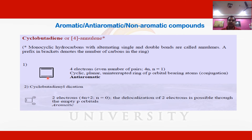In cyclobutadiene, it is cyclic and consists of two pi bonds, meaning four pi electrons, so it does not follow the 4n+2 rule. Instead, it follows the 4n rule used for anti-aromatic compounds. Since we have four pi electrons that are a multiple of four, n = 1, and cyclobutadiene is cyclic, planar, and has conjugation with alternate double and single bonds, giving an uninterrupted pi electron cloud above and below the ring. Therefore cyclobutadiene is anti-aromatic.